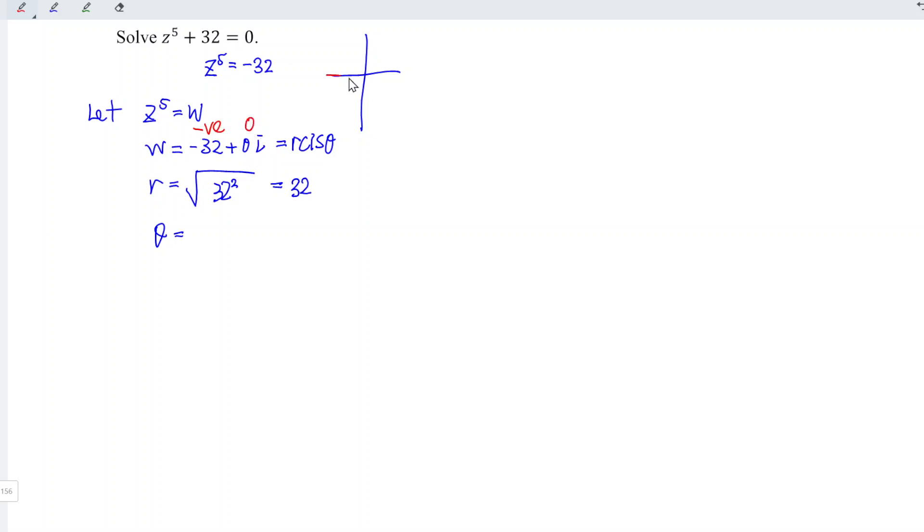So from here, we can see that it must be on the left-hand side of the x-axis. From here, we have 0 degrees, here 90 degrees, and here is 180 degrees, which means that theta must be 180 degrees in order to fulfill this condition. From here, we found that w can be written as 32 cis 180 degrees.